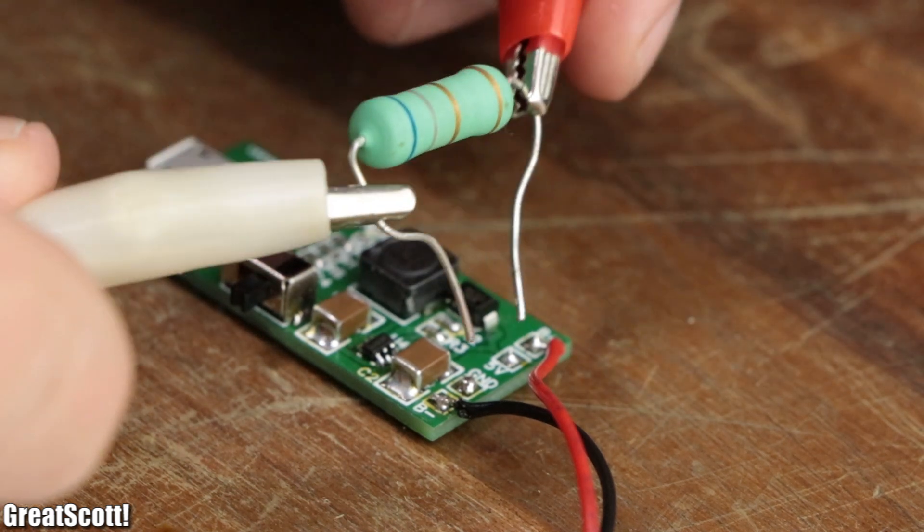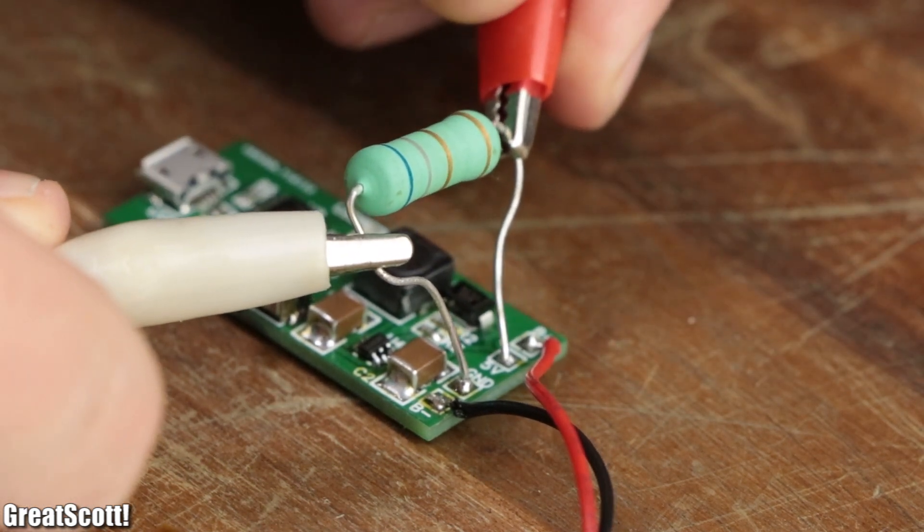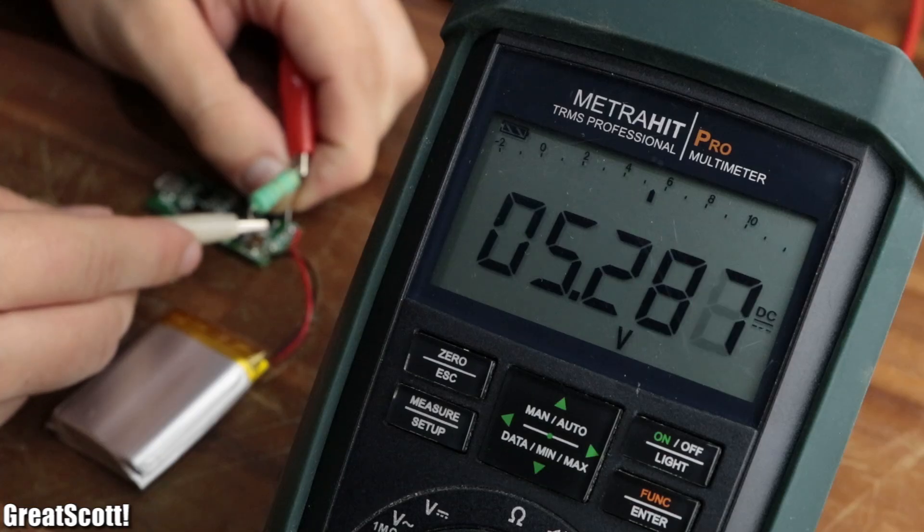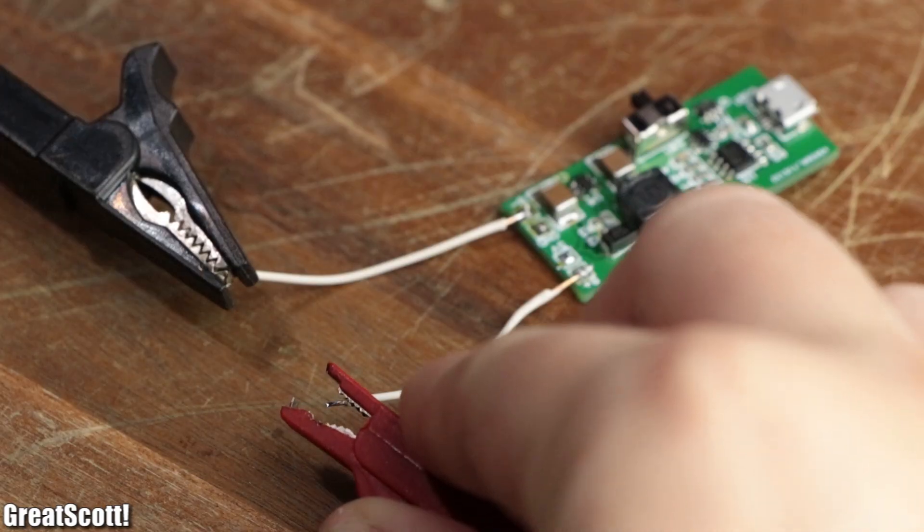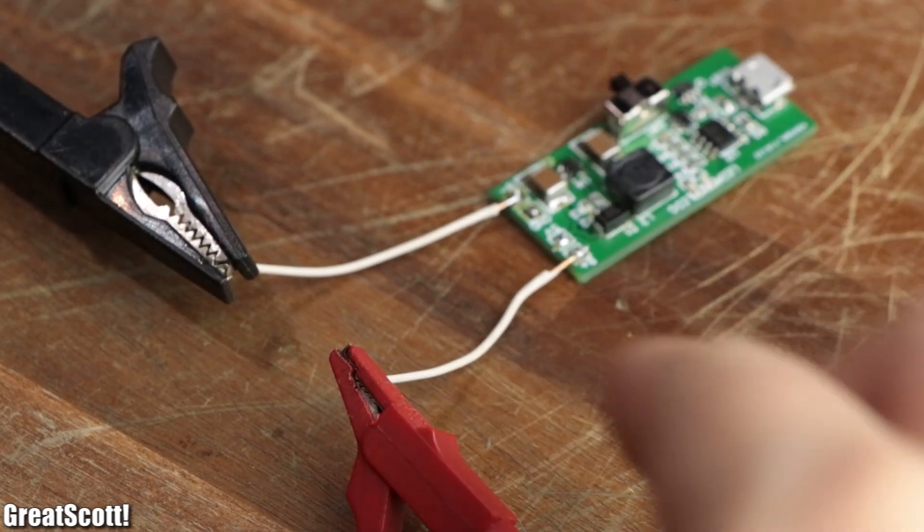More importantly though was whether the voltage would break down again, which it did not. So I unsoldered the LiPo battery and connected my lab bench power supply instead to simulate different battery voltages and thus test the board properly.